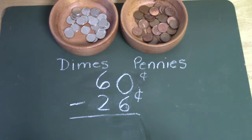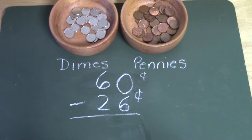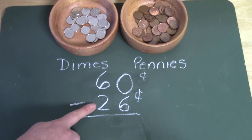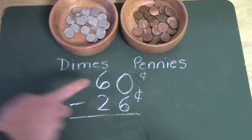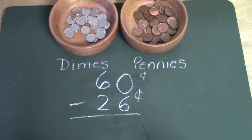Hello class. Welcome to today's math lesson. Today we're going to be subtracting two-digit numbers using pennies and dimes. We're going to subtract 26 cents from 60 cents.